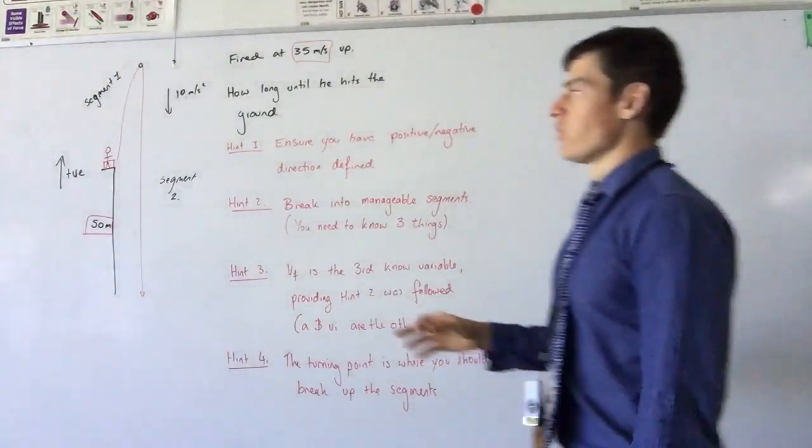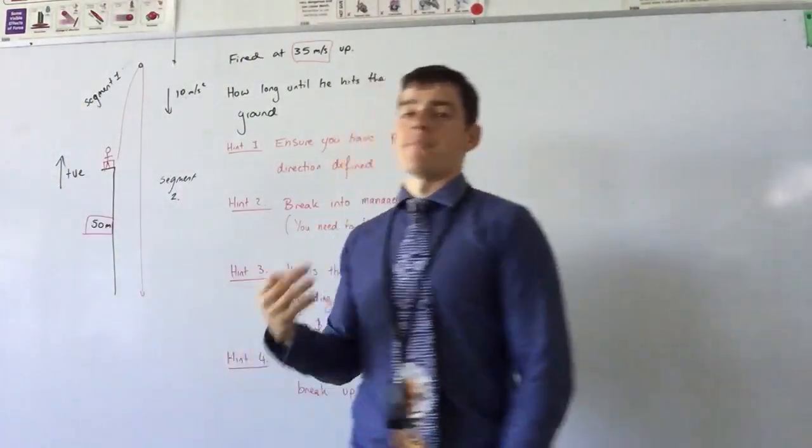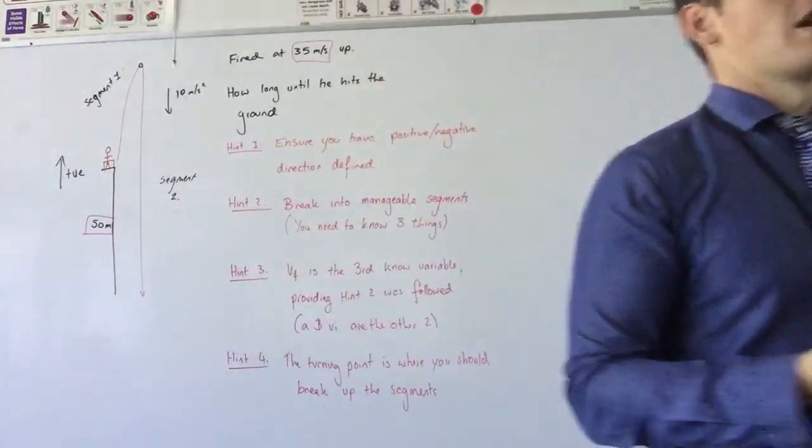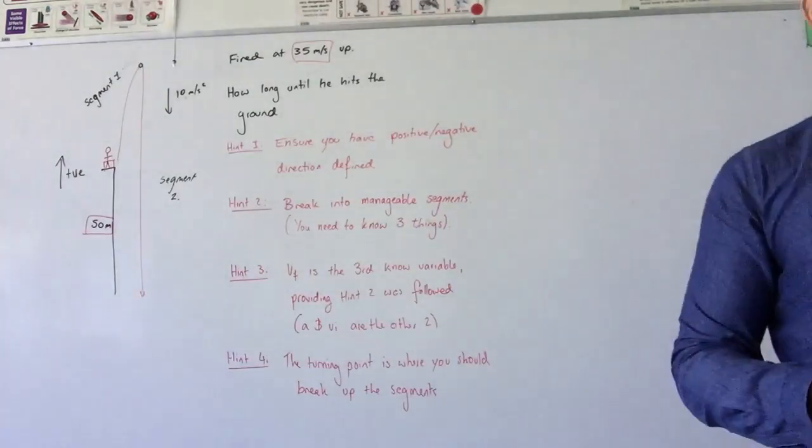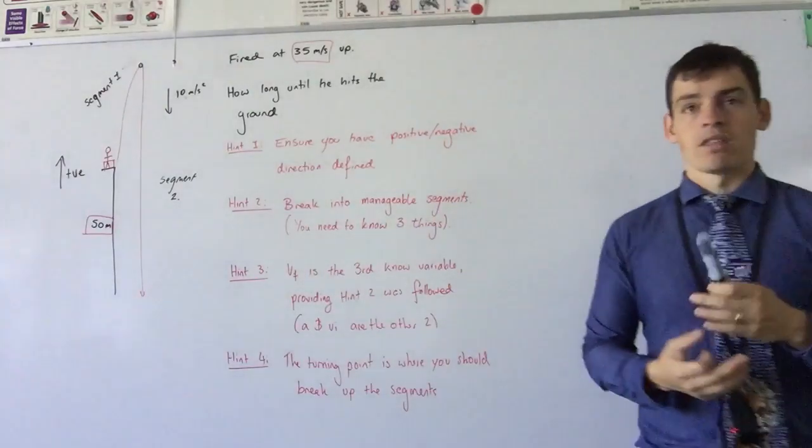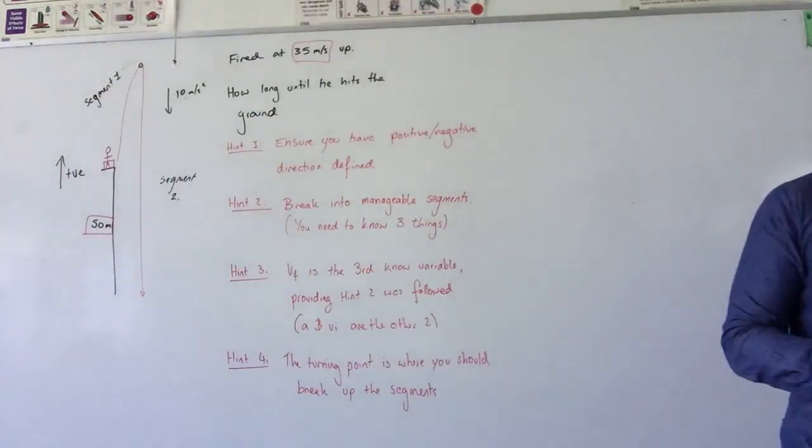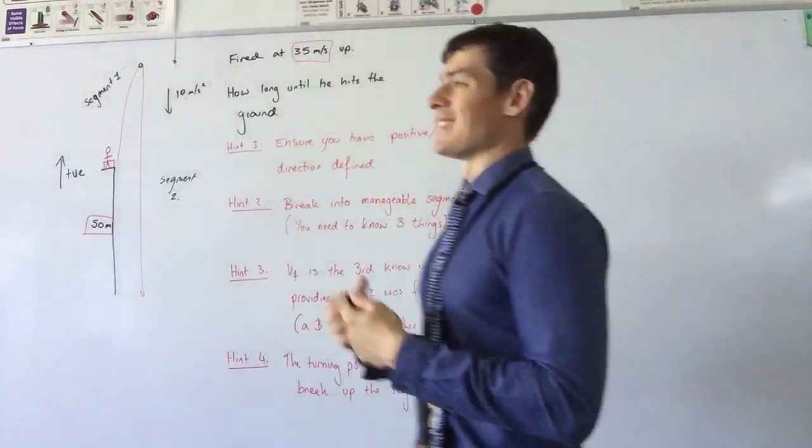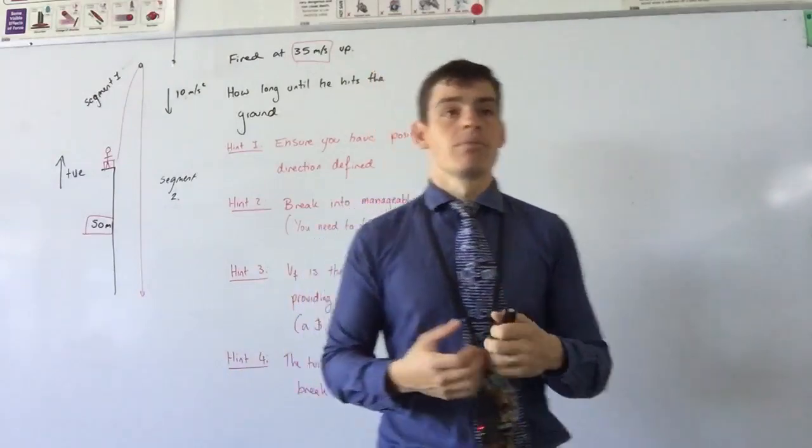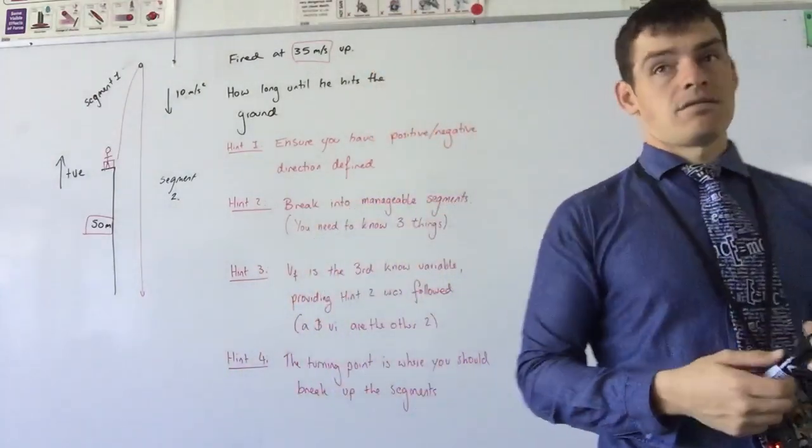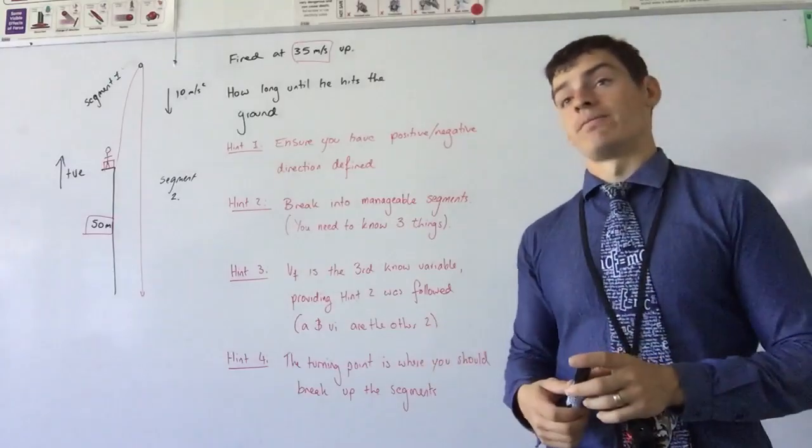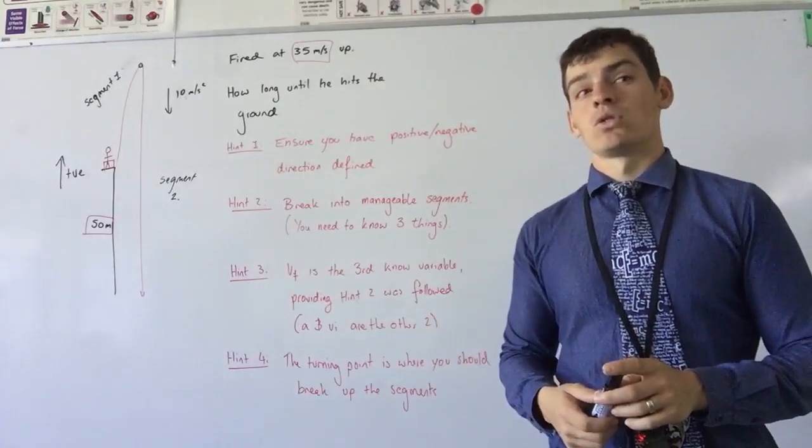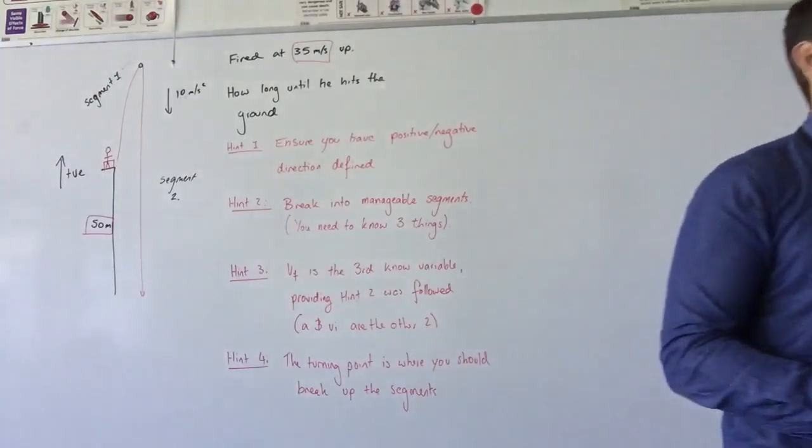Now I said before that I thought I had three pieces of information, which is the magic number for these kinematics equations. I need three. But that 50 meters is actually a bit of a trap. It's not relevant until we get further down. Your knowledge of quadratics isn't good enough for that to help you right now.